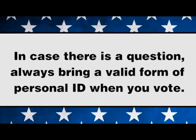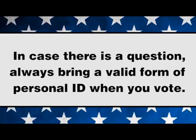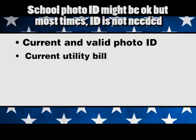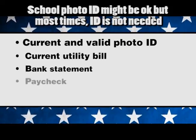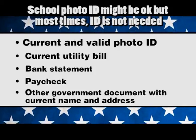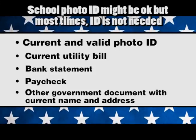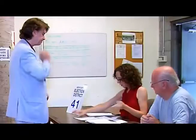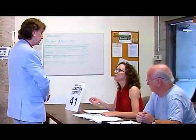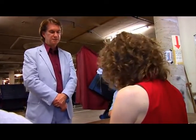Identification may include, but is not limited to, a current and valid photo ID or a current utility bill, bank statement, paycheck, or other government document that shows your current and complete name and current address. If there is a problem with finding your registration when you sign in, or you do not have the necessary ID, you cannot vote on the machine.